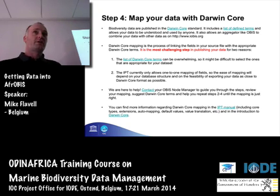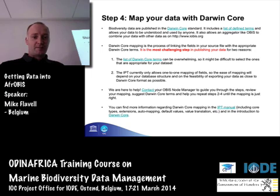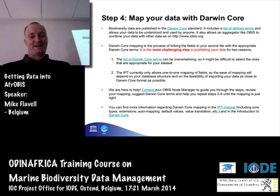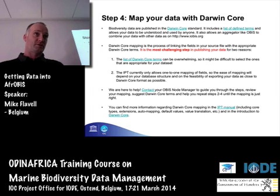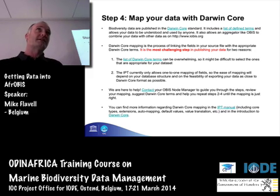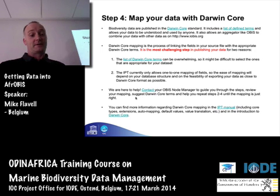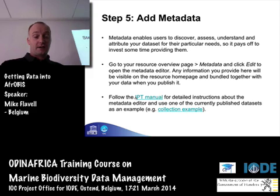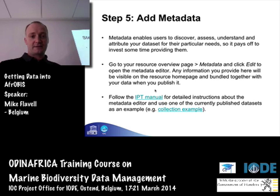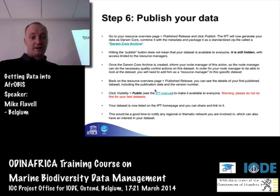You get a preview to preview the file once it's uploaded, then you map your fields to Darwin Core. We give you links to the Darwin Core standard and all of the defined terms. This mapping is the most challenging part of publishing your data on the IPT. The list of Darwin Core terms can be quite overwhelming — there are so many of them and it's difficult to select the ones appropriate for your dataset. We've got a document that gives the OBIS schema and the list of Darwin Core terms. Get in touch with us if you're having problems mapping your dataset to Darwin Core.